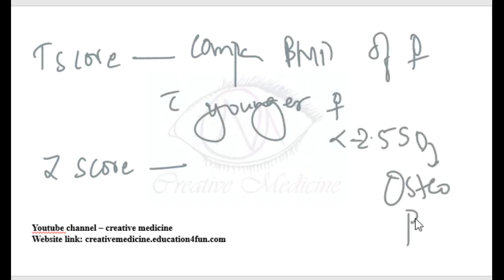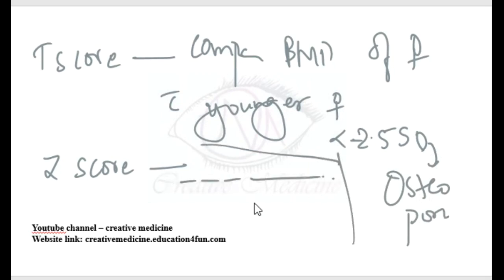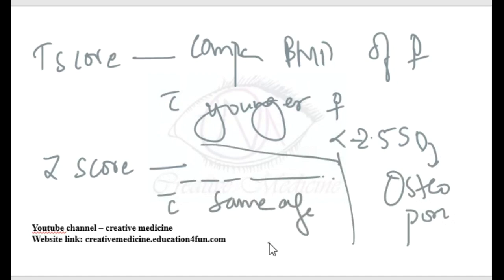The Z-score compares the bone mineral density of a female with that of other females of the same age and race.